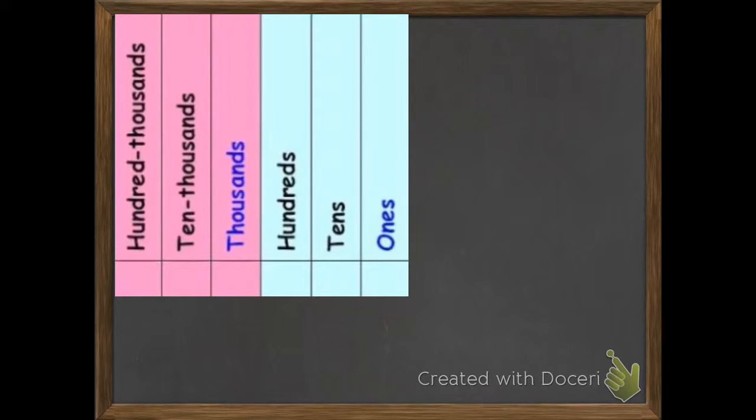Here is part of a place value chart. We have ones, tens, hundreds, then thousands, ten thousands, and hundred thousands.